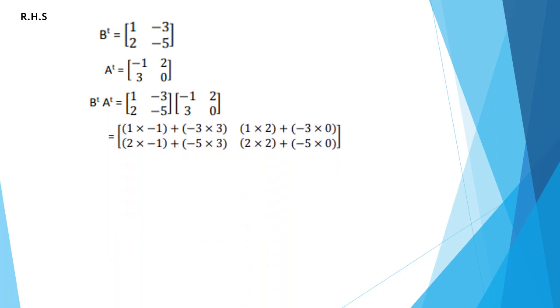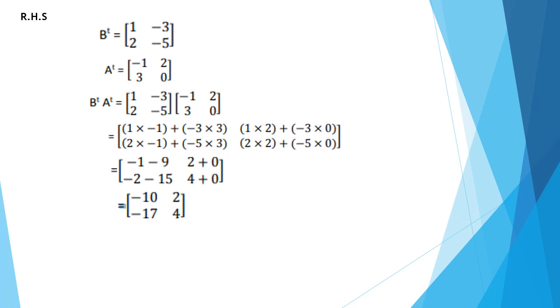Now take the right hand side. Find B transpose first and A transpose — changing rows into columns for each. Then multiply B transpose and A transpose matrices together. For multiplication: first row with first column, first row with second column, second row with first column, second row with second column. After adding the numbers you get: minus 10, 2, minus 17, and 4. Both the left hand side and right hand side results are the same, so it is verified that (AB) transpose equals B transpose times A transpose. Thank you.